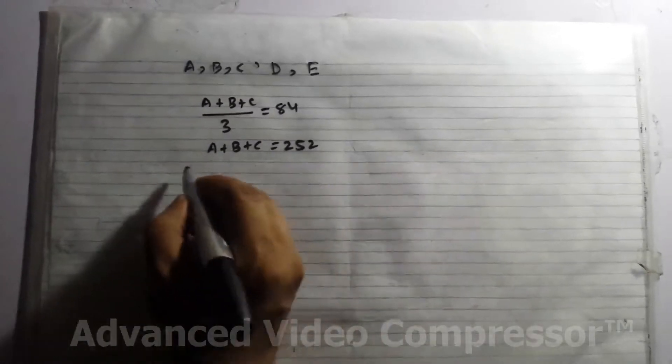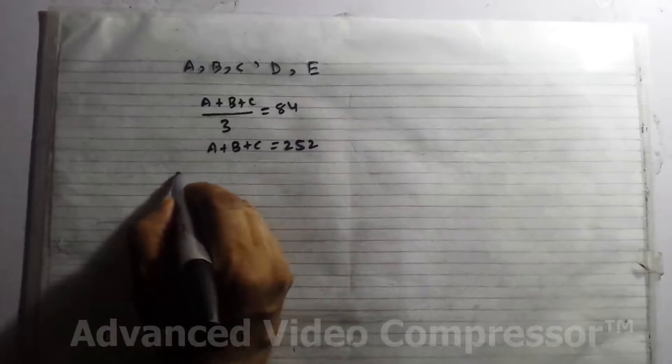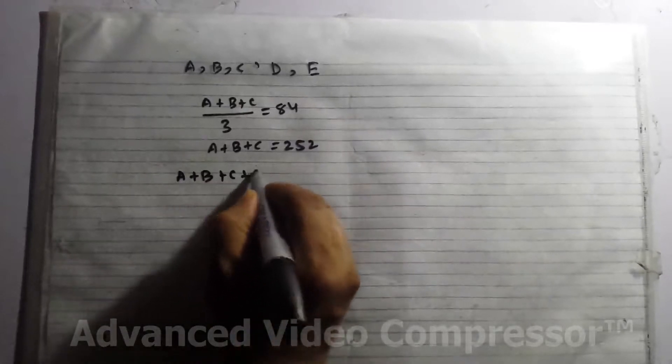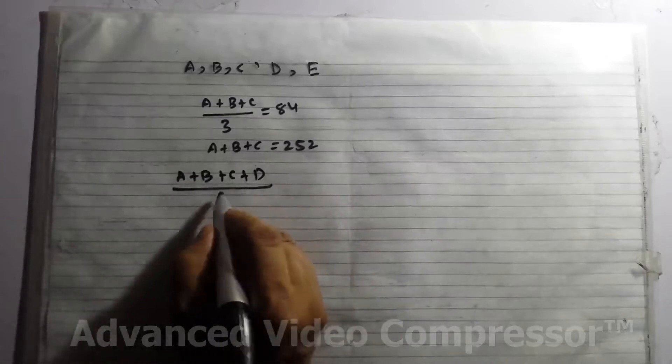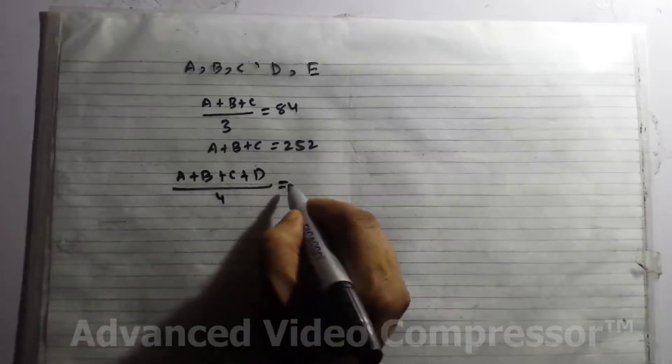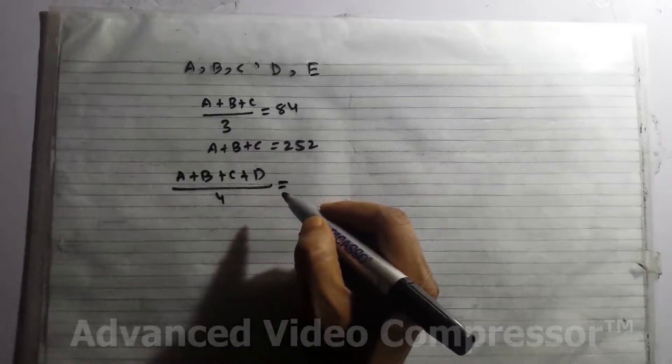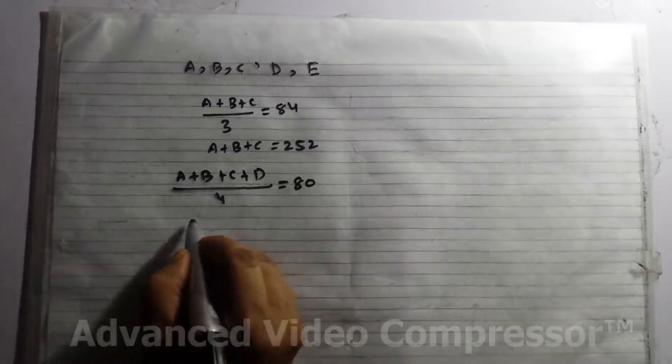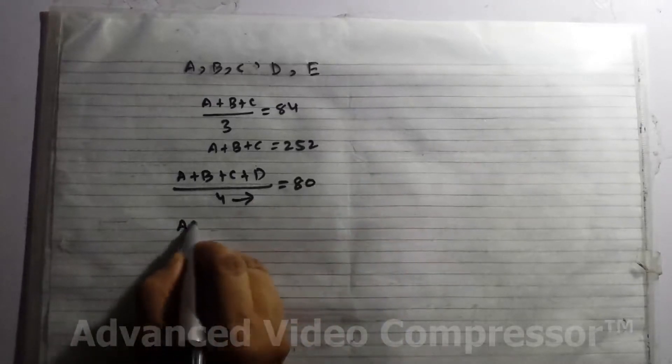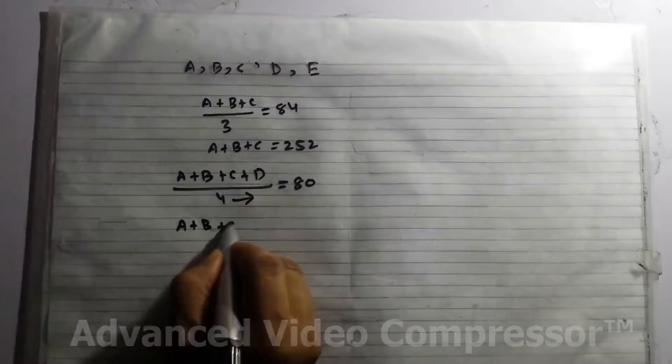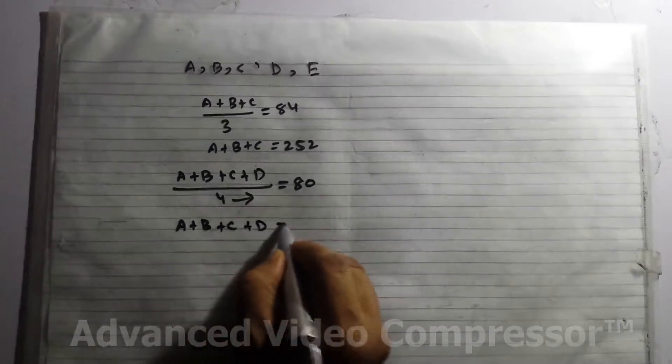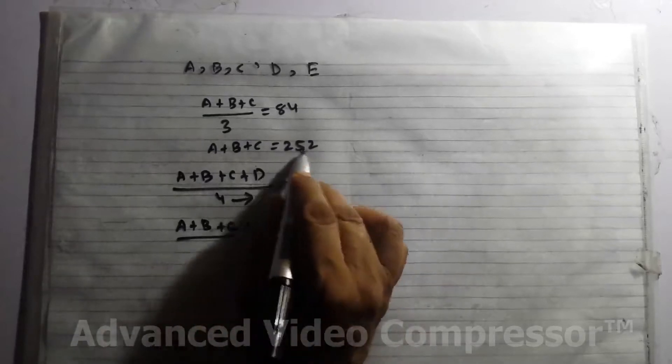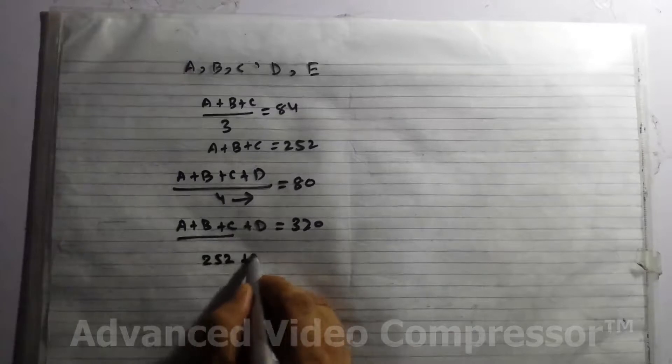Now he says that a fourth person D joins them, then their average weight becomes 80 kilograms. So (A + B + C + D) / 4 = 80. From there, A + B + C + D = 320. Here we can put 252 plus D equals 320.